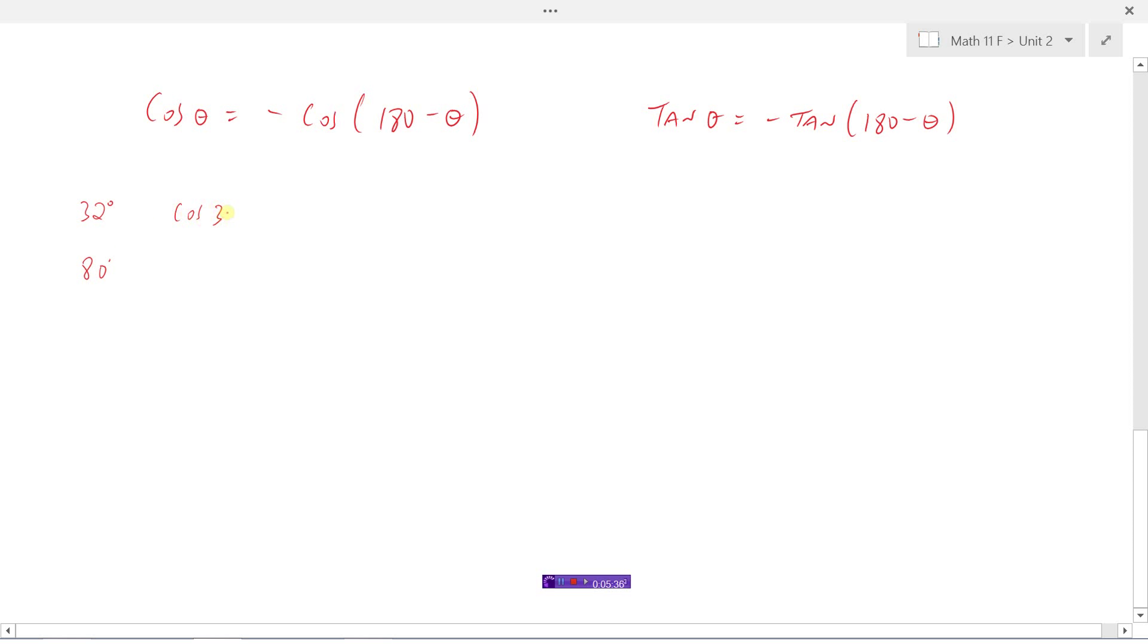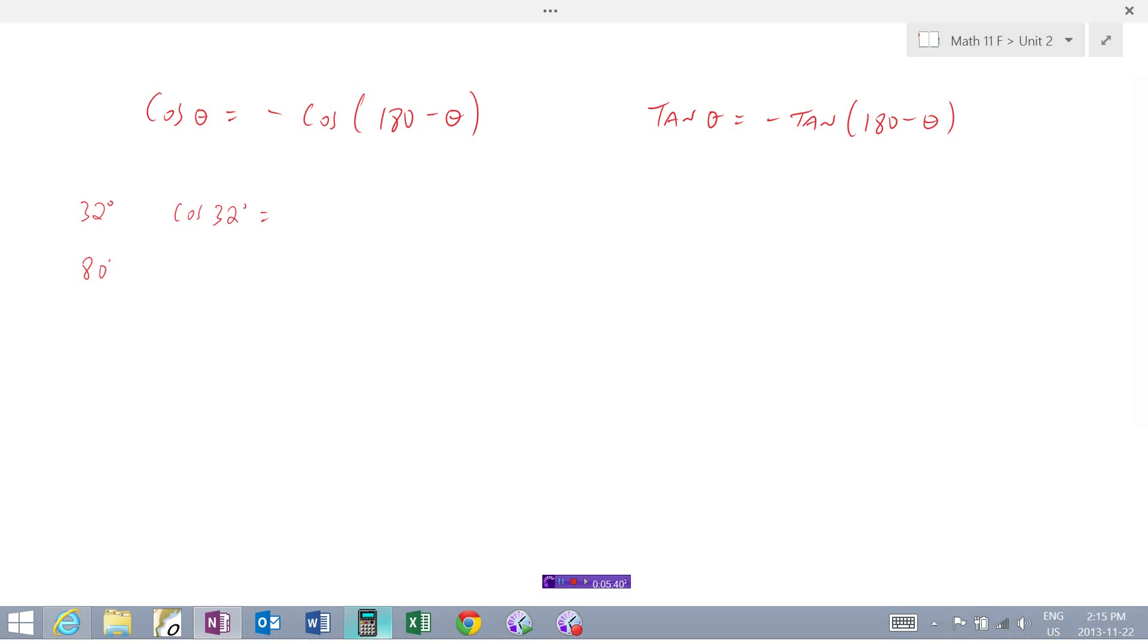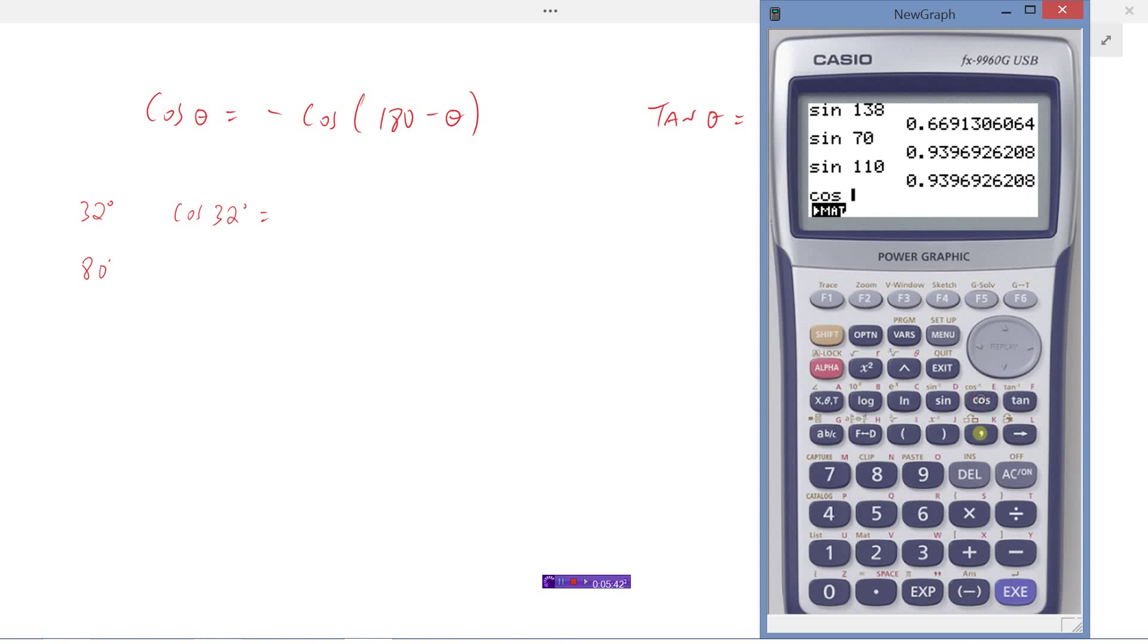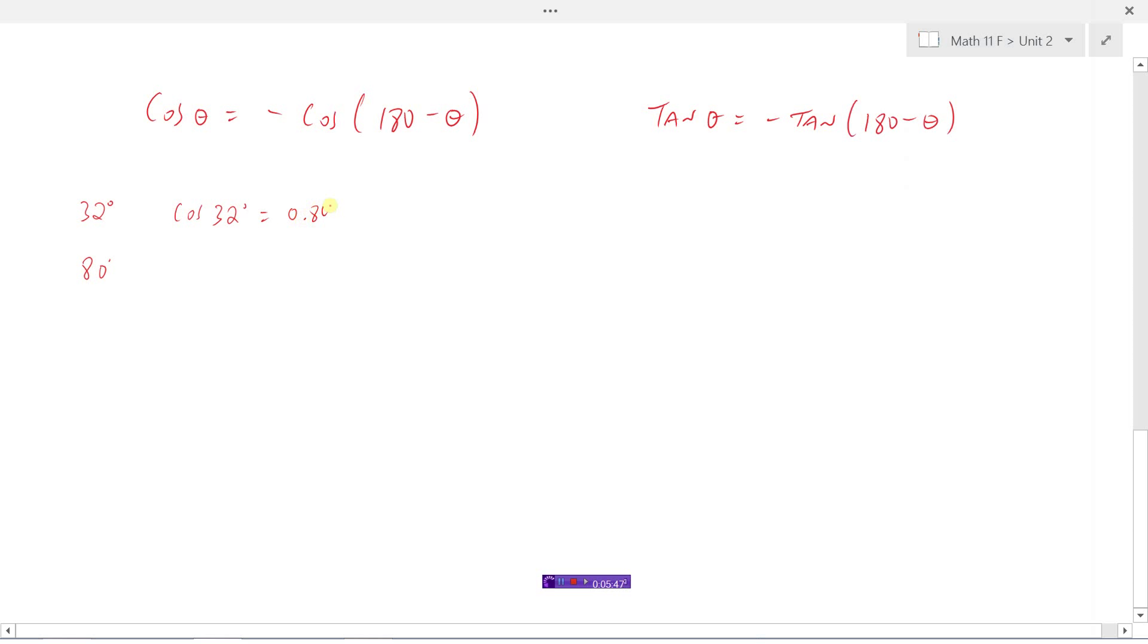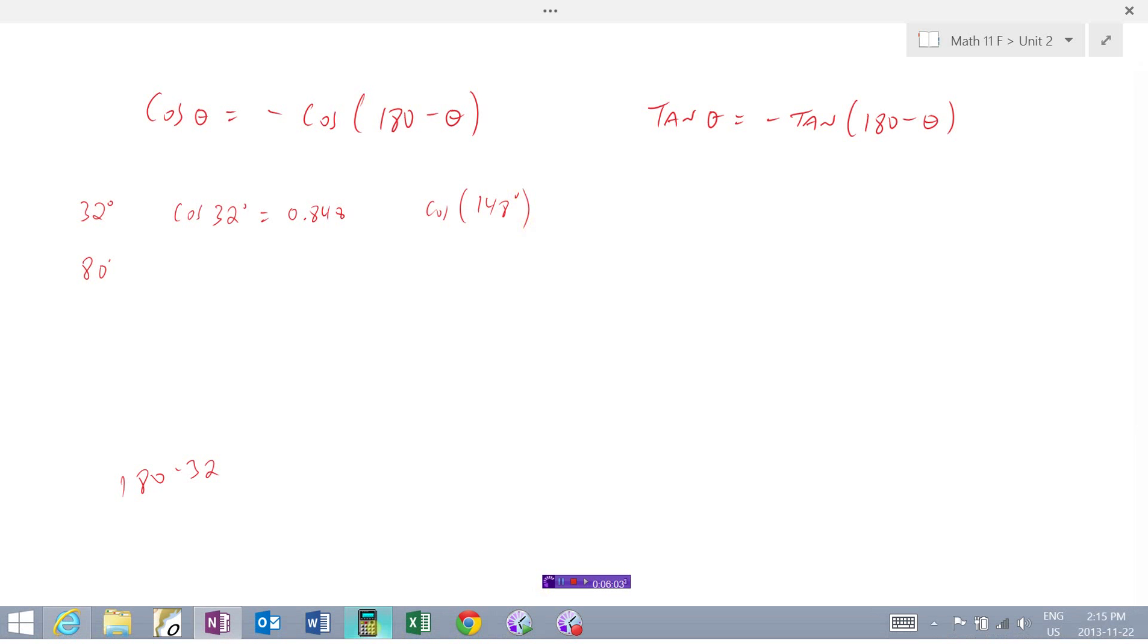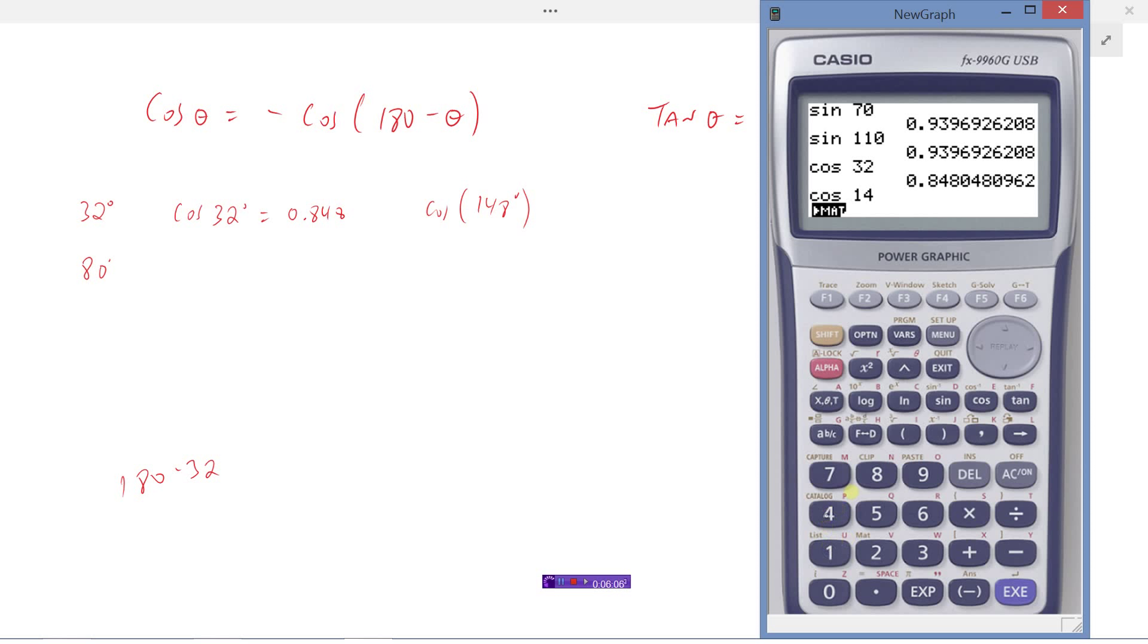The cosine of 32 degrees is 0.848. And the cosine of 180 minus 32—let's just figure this out—180 minus 32, that would be 148. If we did the cosine of 148, it's exactly the same, but with a negative in front of the ratio. So negative 0.848.